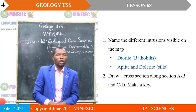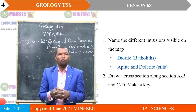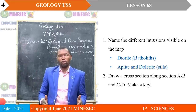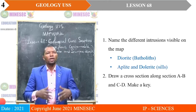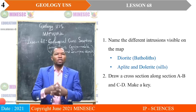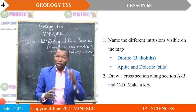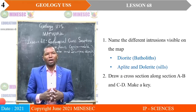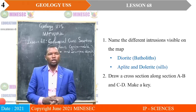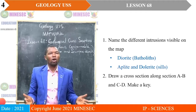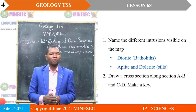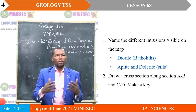To answer the first question — name the different intrusions visible on the map: first, we have diorite. Diorite is a plutonic rock, so it indicates a batholith, which is a major intrusion. We have aplite and dolerite, which are all occurring only on the batholith. So we consider that they are all sills because they are not cutting across other beds or going out of their batholith.